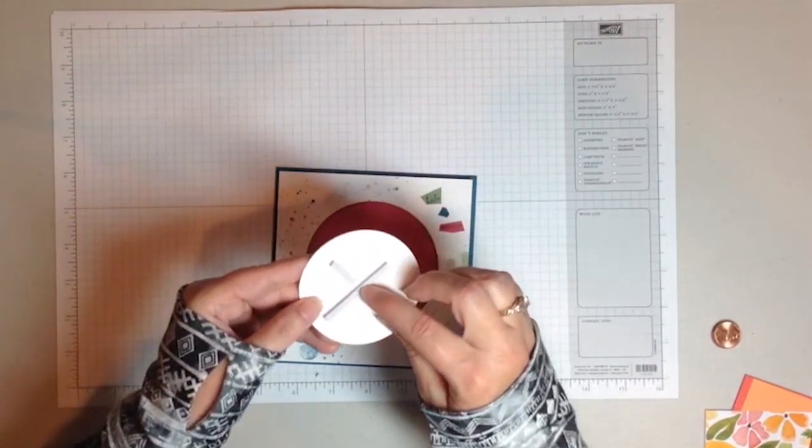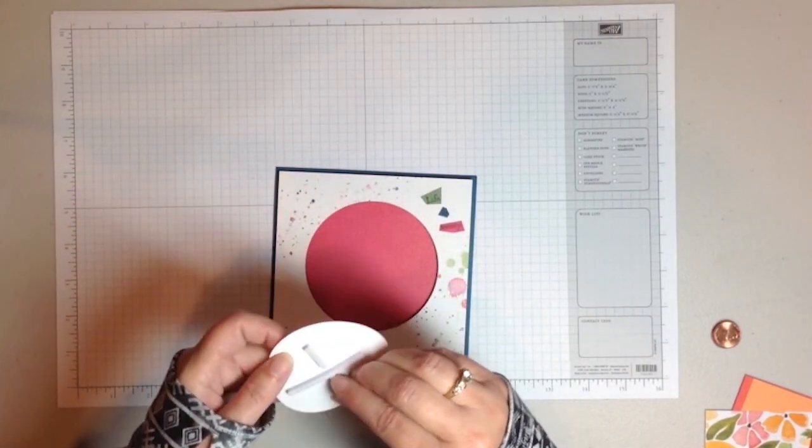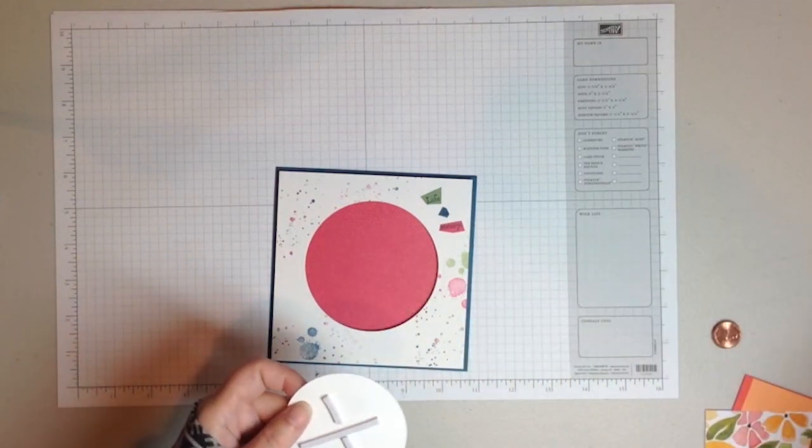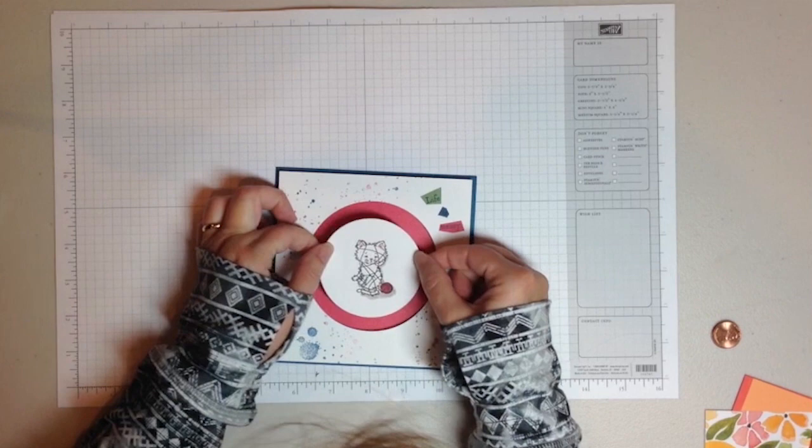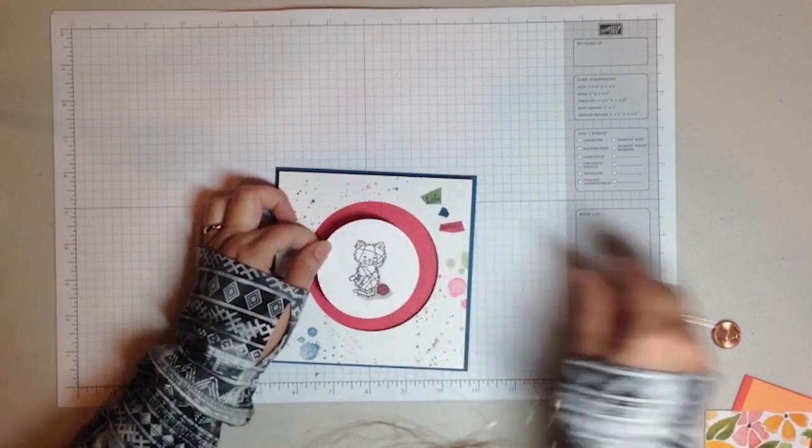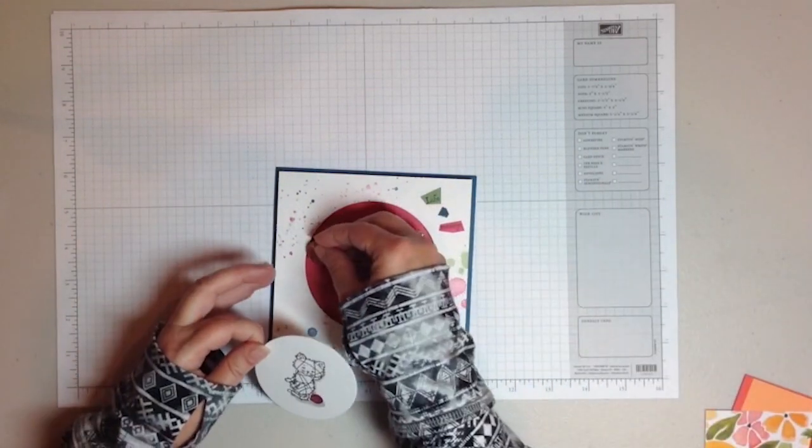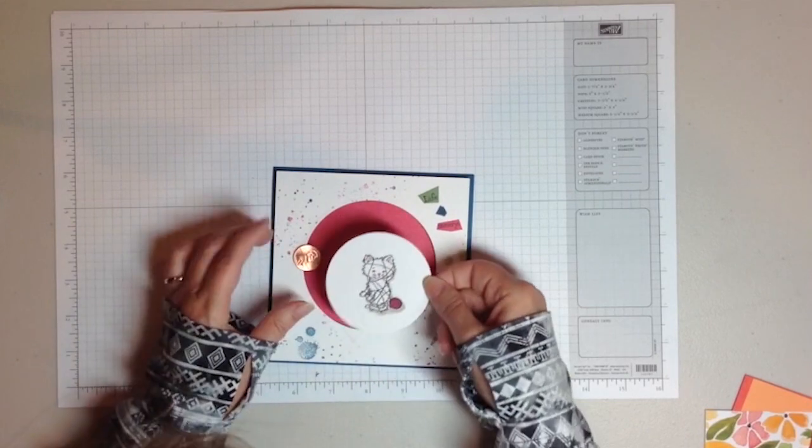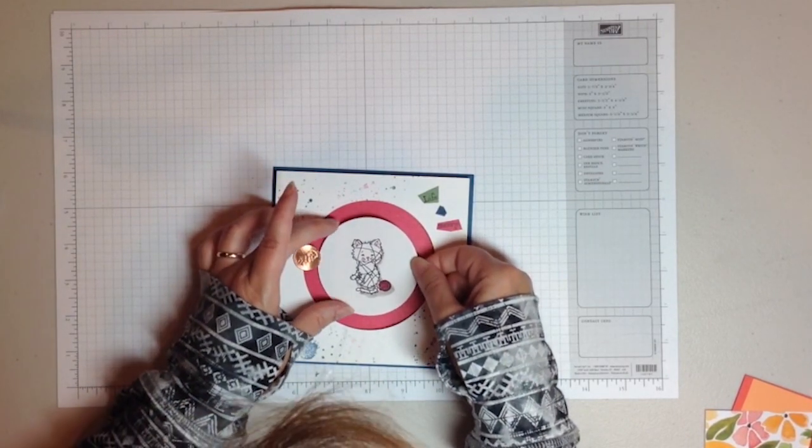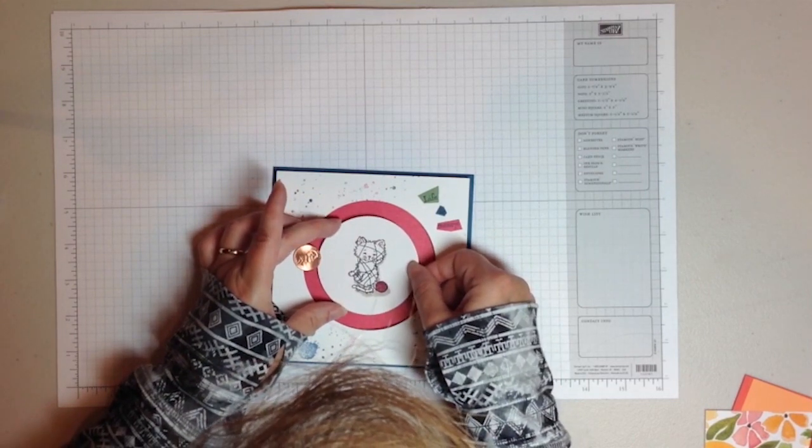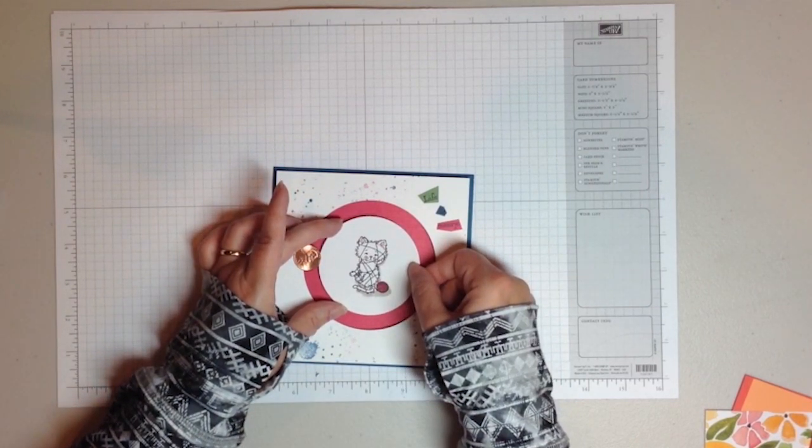And then take the center portion and line that up. Again, taking time to make sure that you have that. Oh, and I should have mentioned before that I put my penny in so that I have that right there and take time to line that up.